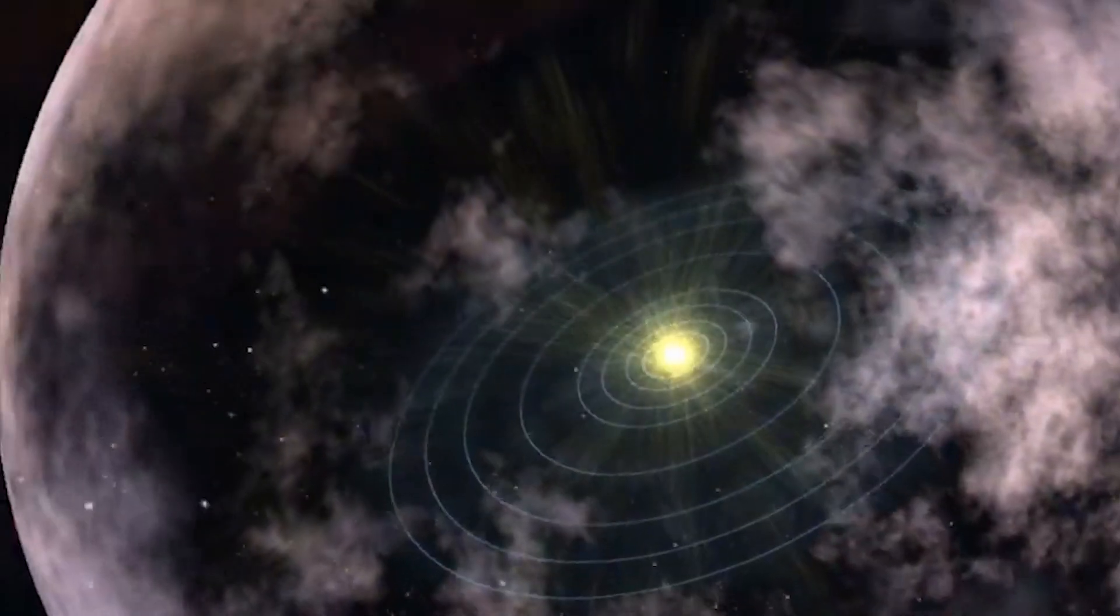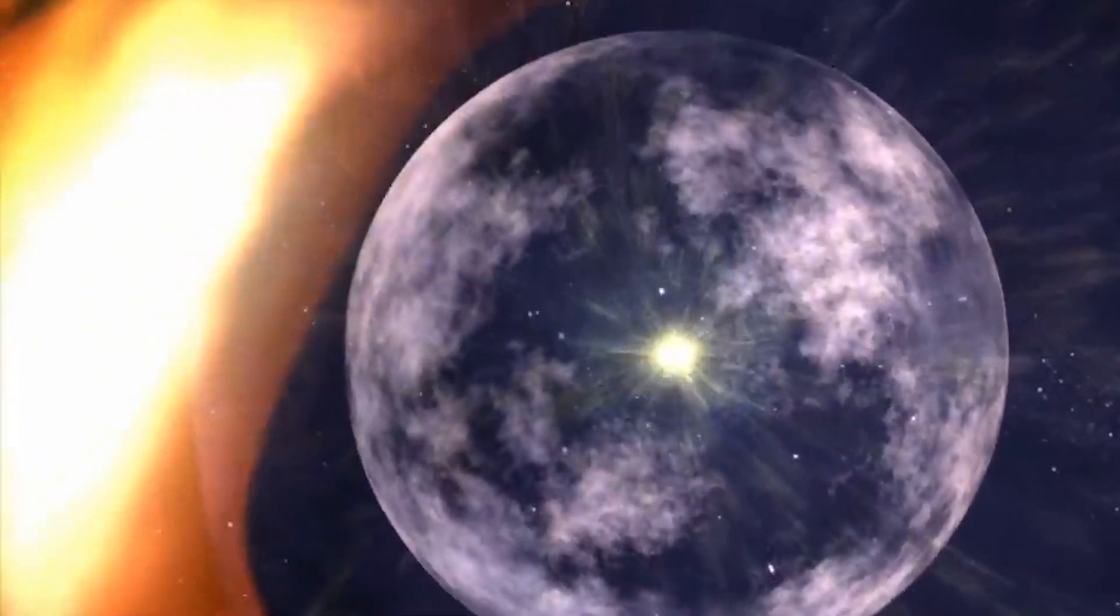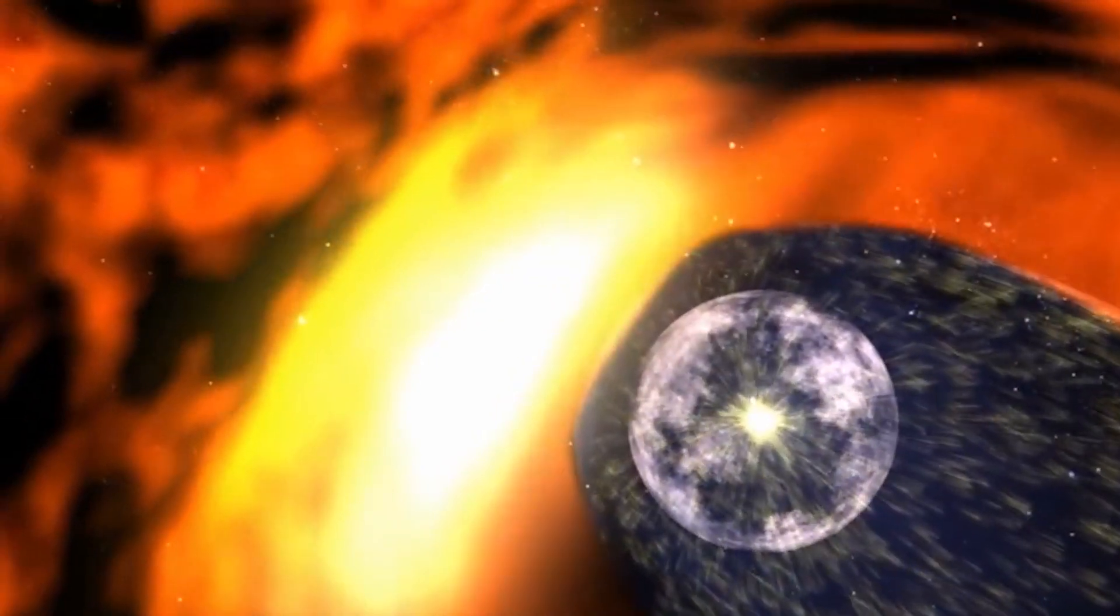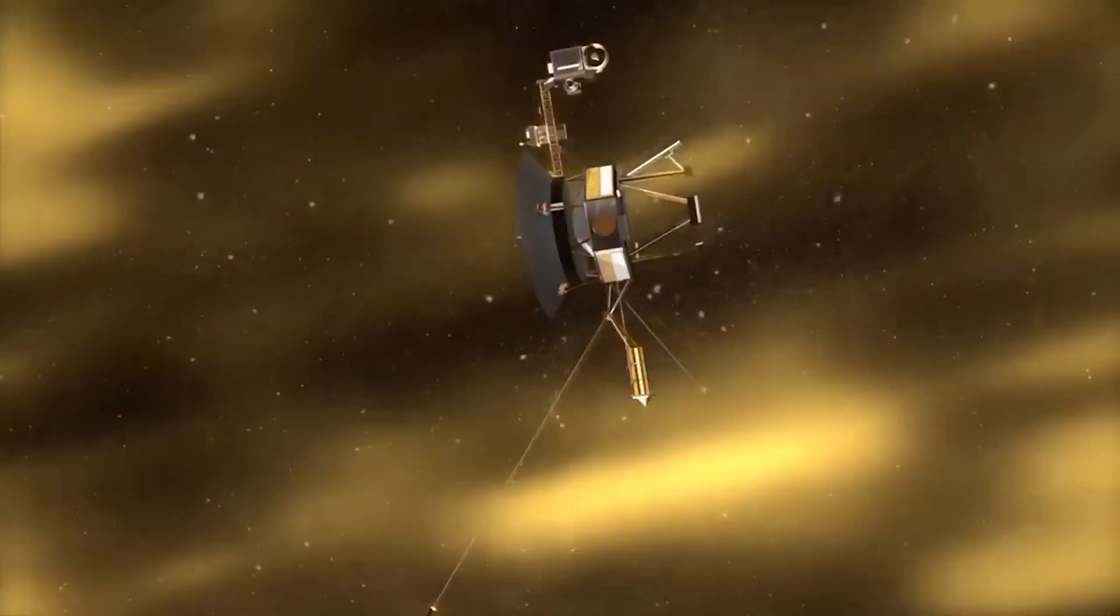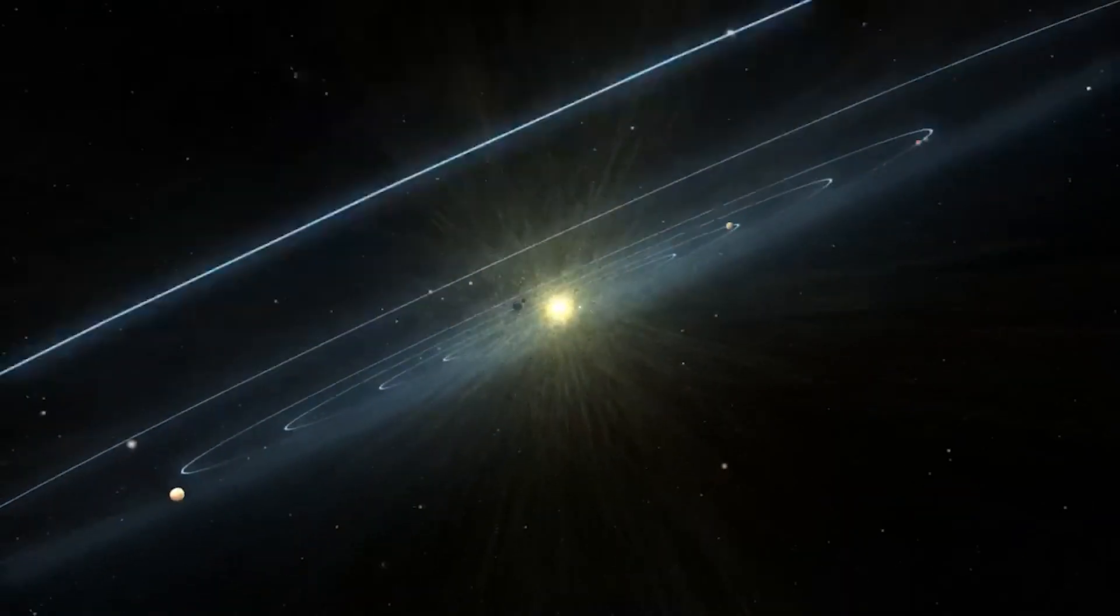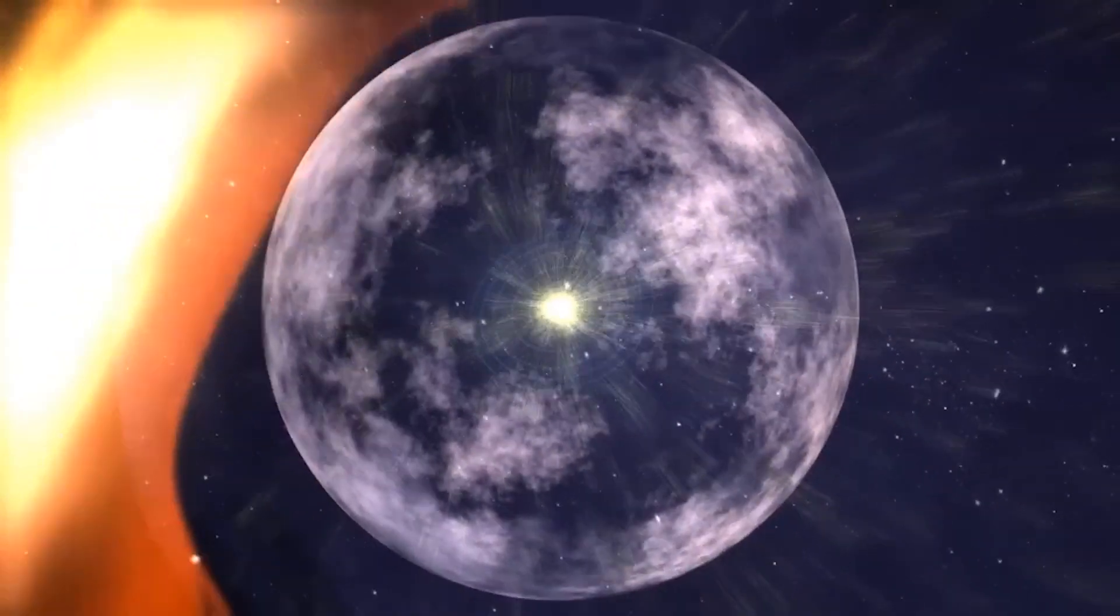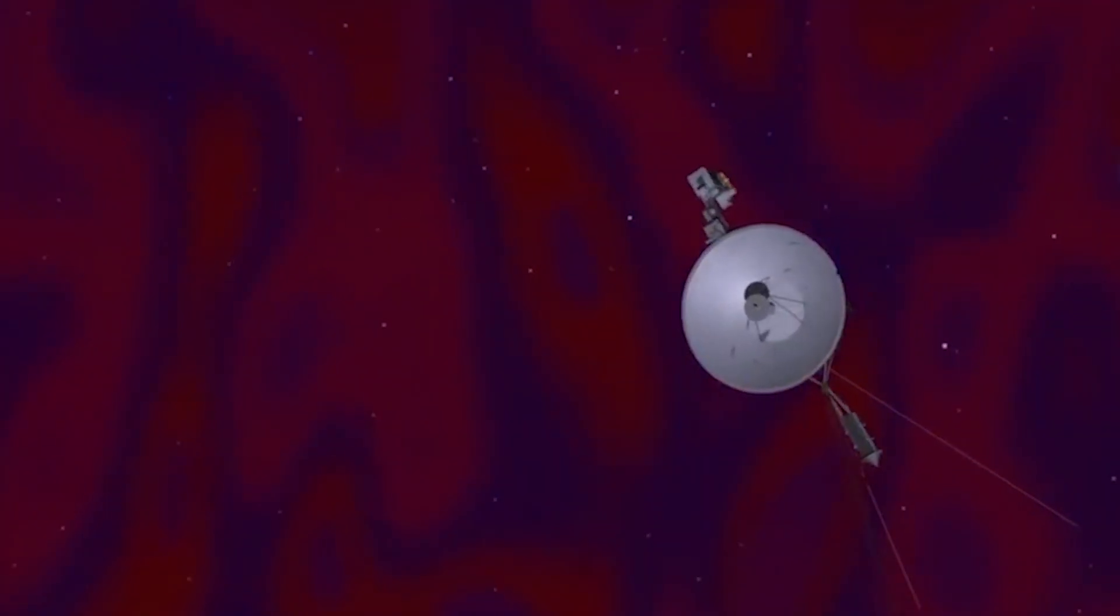It is characterized by the gradual decrease in the velocity of high-speed solar winds as they transition into subsonic speeds. Voyager traversed the termination shock and entered the heliosheath, where the solar wind continued to decelerate and interact with the interstellar medium.